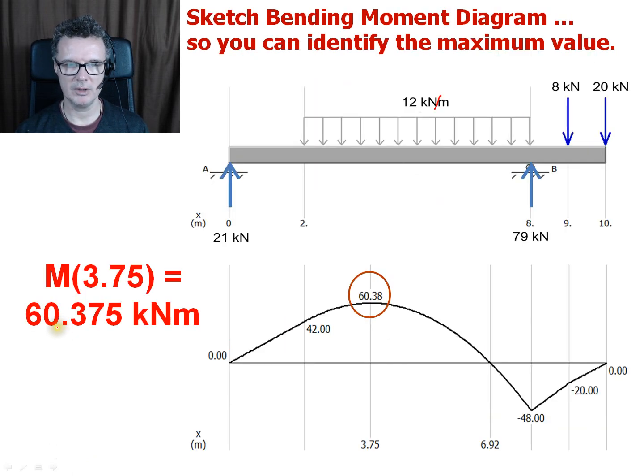And then you'll get a value of 60.375 kilonewton meters. When we plot this on MD solids we will get a value of 60.38 rounded up a little bit. You notice that gives me the maximum there and also as we suspected that was the other point where the shear force diagram cut, so that's also going to give me a minimum value of minus 48 there.